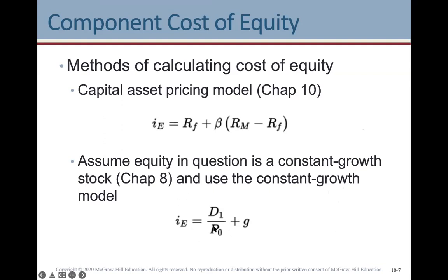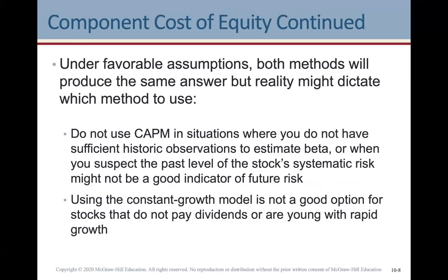CAPM is a good way to determine the cost of equity, but for a constant growth stock you can also use the constant growth model: cost of equity = D1 / P0 + growth rate. The growth rate must be constant in this model. With favorable assumptions, both methods will produce the same answer, but reality may dictate which method to use.